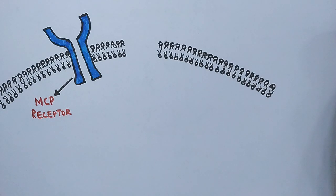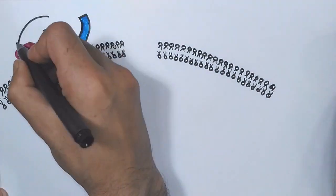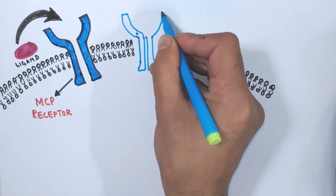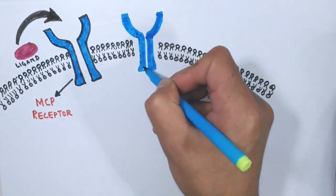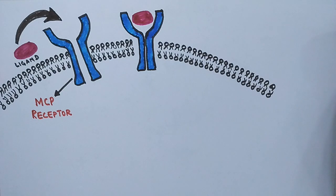Prior to ligand binding, the receptor is in the form of monomers. When there is any substance, say a repellent near the bacteria, the repellent acts as a ligand for the MCP receptor. As you can see in this diagram, the repellent acts as a ligand for MCP receptor and shows ligand binding activity towards this receptor.